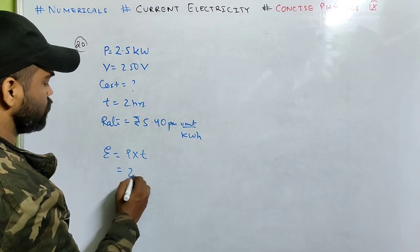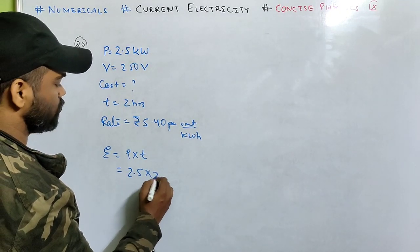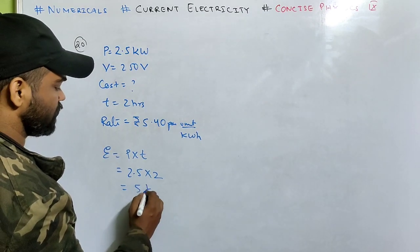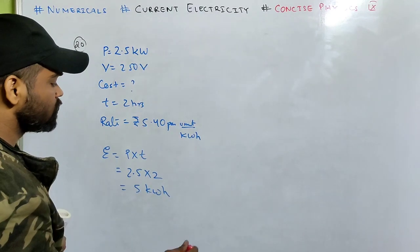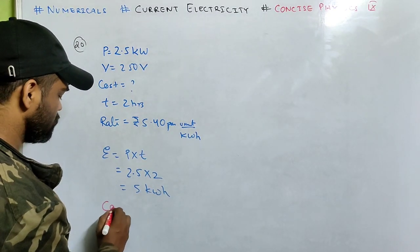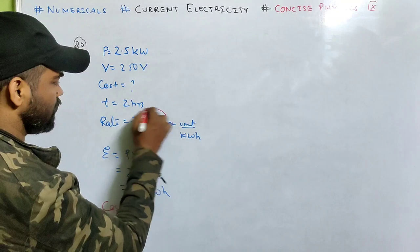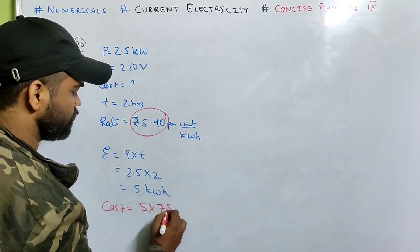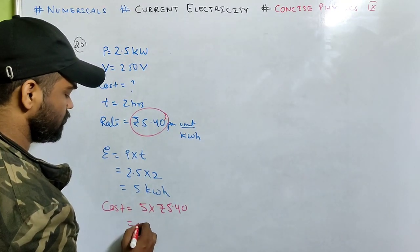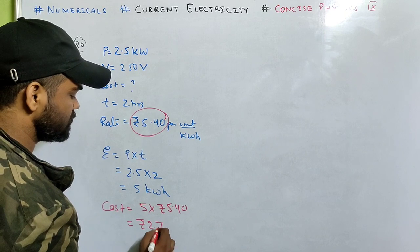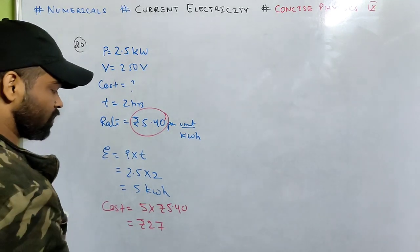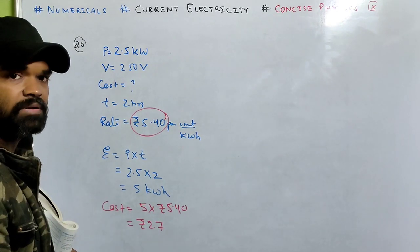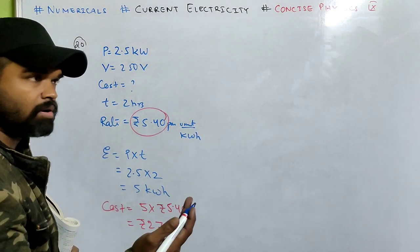Very easy - energy is P into T, so energy is 2.5 kilowatt into 2 hour, which means 5 kilowatt hour. Simple calculation. So what will be my cost? The energy consumed times the rate, that's rupees 5.40, equals rupees 27. Done, very easy. Just calculate energy in kilowatt hour, P into T, and then find the cost.